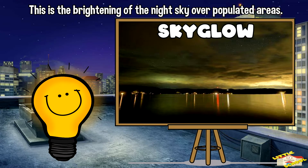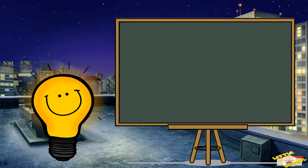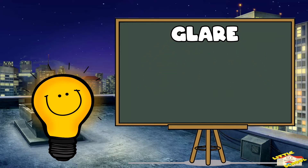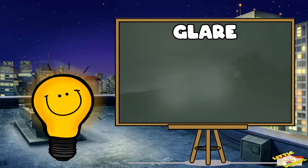Sky glow: this is the brightening of the night sky over populated areas. Instead of seeing a dark sky full of stars, the sky looks kind of hazy and illuminated due to scattered light.